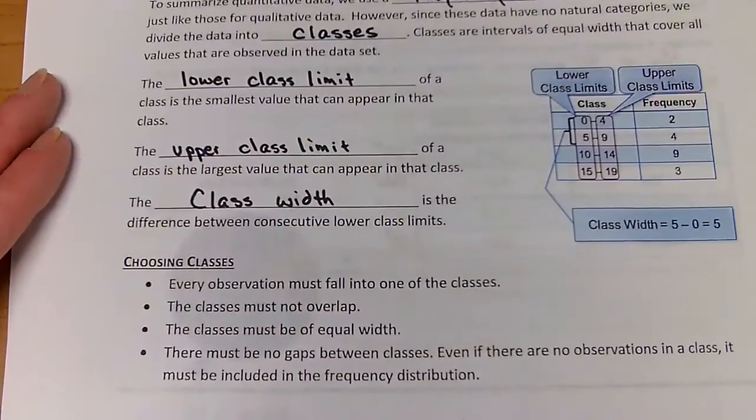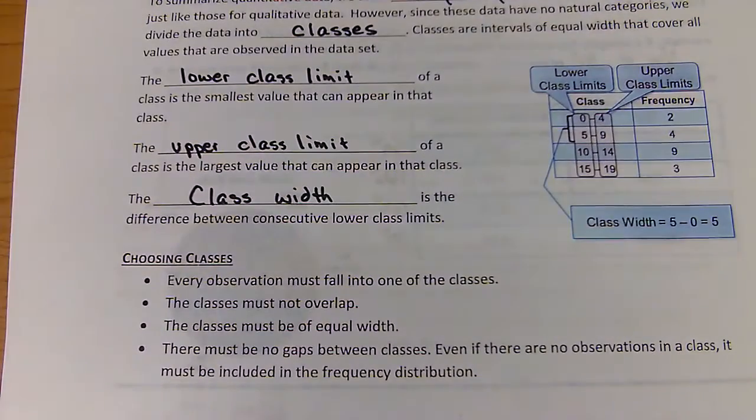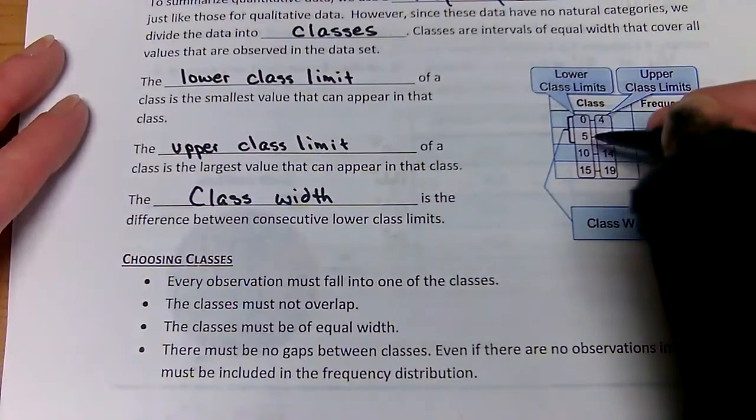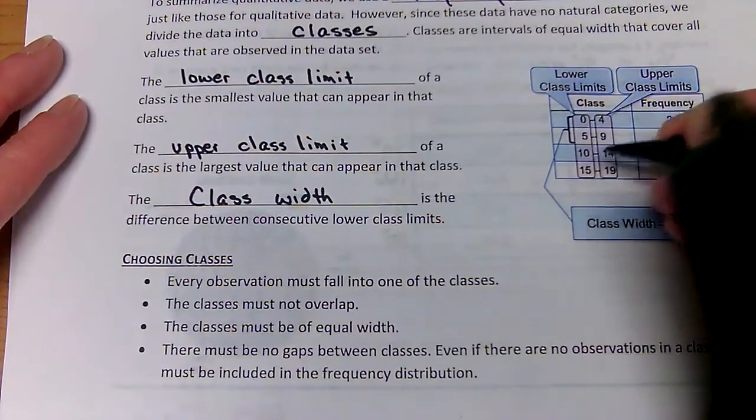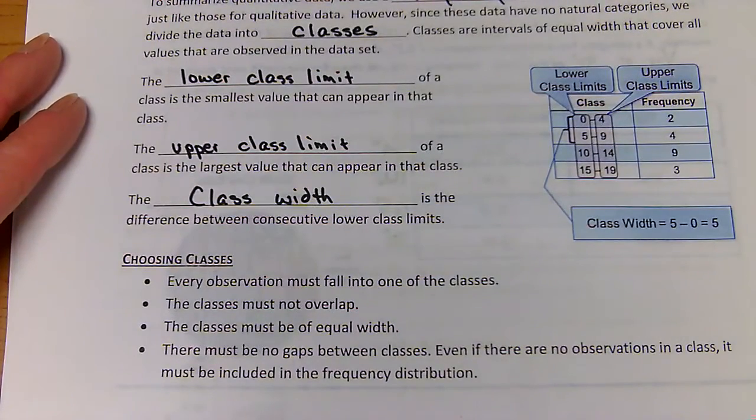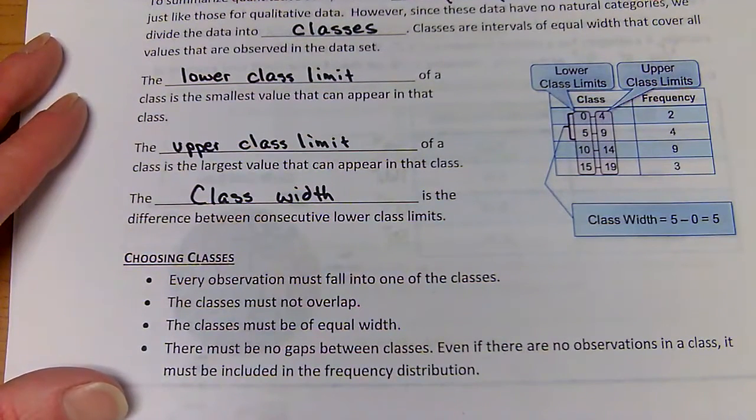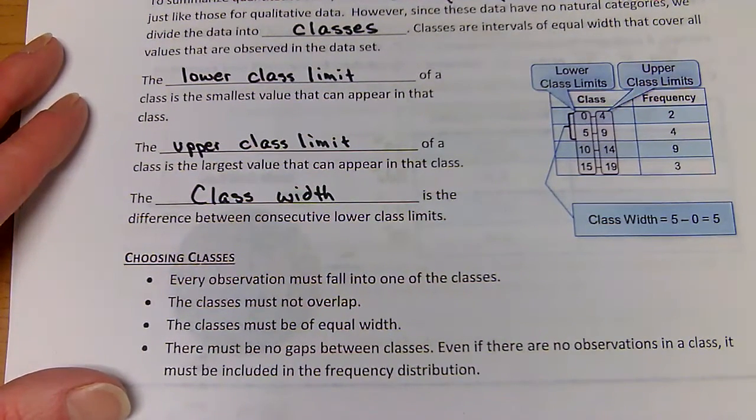When choosing classes, we want to make sure every observation must fall into one of the classes. The classes must not overlap and they must be of equal width. There must not be any gaps between the classes either. Even if there's no observation in that class, it would have a frequency of zero and that needs to be noted as well.